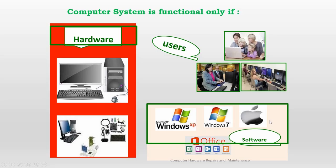A computer cannot operate without three things: number one, the hardware; number two, the software; and number three, the user. Hardware is the tangible or physical part of the computer. Software is the programs that are inside the computer, while the user is the person who operates the computer.